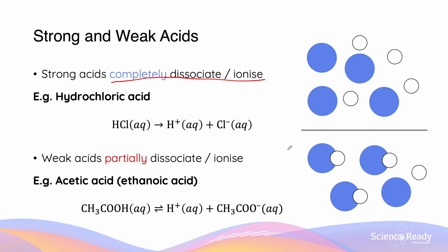If you're confused by the diagram, the white circle represents the hydrogen ion, whereas the blue circle indicates the formed anion. In the case of hydrochloric acid, the blue circle is Cl⁻ and white is H⁺. For acetic acid, the white is H⁺ and the blue is the acetate ion.